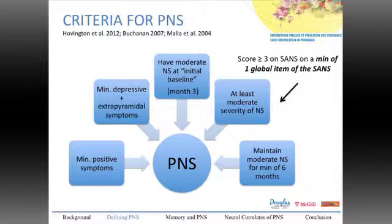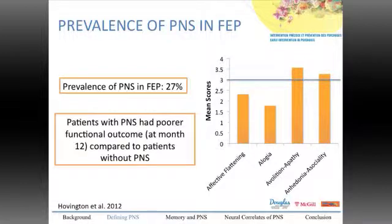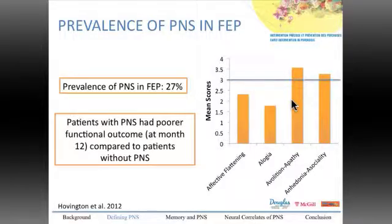We looked at four of the global items of the SANS, excluding one. This severity had to be present at month three, which we consider our initial baseline, and then maintained for a minimum of six consecutive months. When we applied this definition to 158 first episode psychosis patients, we found a prevalence rate of 27%. Patients with persistent negative symptoms showed poor functional outcome at month 12 compared to those without. Looking at individual SANS items, the PNS group had elevated levels of avolition-apathy and anhedonia-asociality.